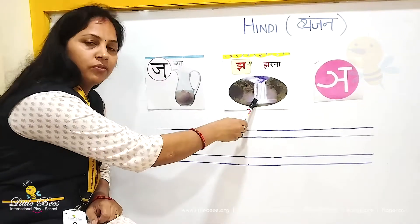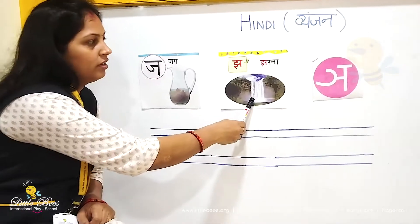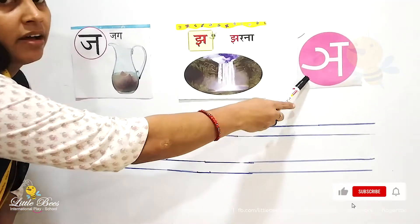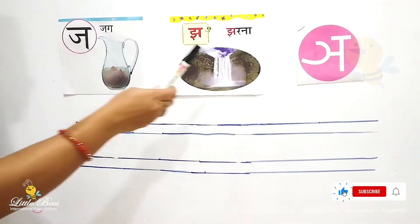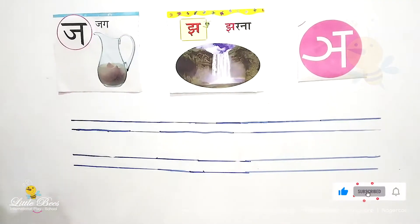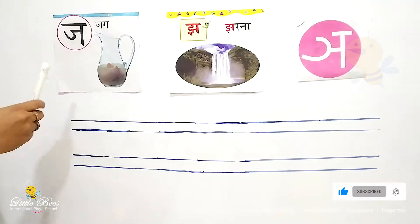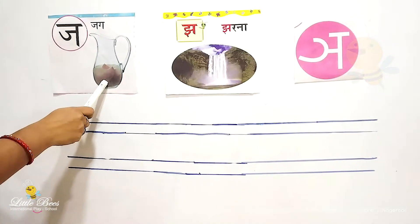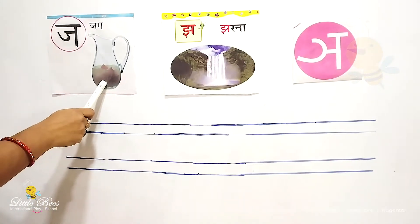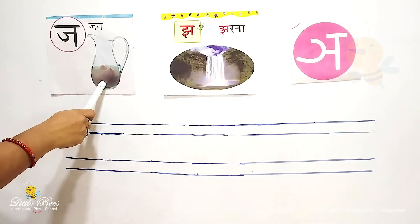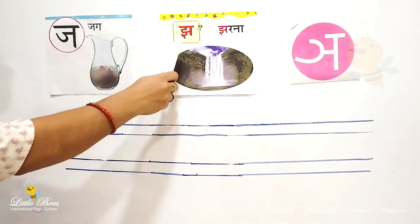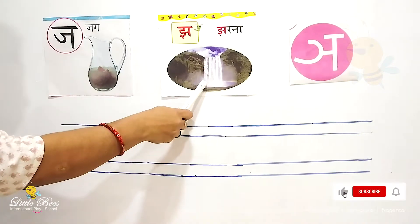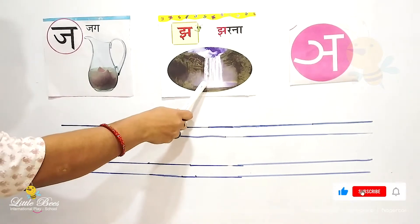Jha means Jharnam. Jharnam is waterfall. Next is Jha, so let's repeat it again. Say Jha. Jha means Jha. Say Jharnam. Jharnam is waterfall.